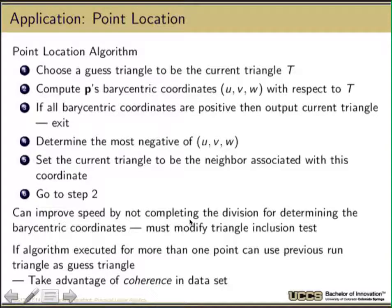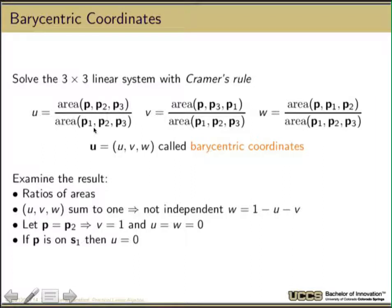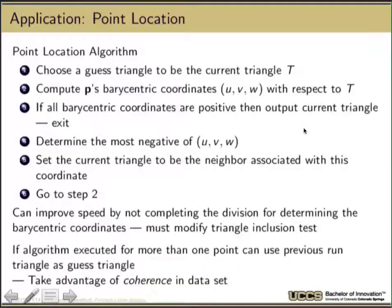It turns out you can also improve this by not completing the division for determining the barycentric coordinates. Remember our barycentric coordinates had this division. You can sort of see that all three of these have the same division. I'm just going to try to figure out which one is the most negative. This won't matter because they'll all be scaled by the same number. I can skip that division step and make it faster. But then I have to be careful as I do that to make sure I don't use it someplace else. If the algorithm is executed for more than one run, you can use the previous triangle as a guess. For example, if I'm clicking around in a structure, I tend to click on one thing and then click on something near it. I don't have to start all over again. Even though the last answer wasn't the right answer for this current object, I can start close to it, which is really just taking advantage of the coherence of the data set and the way people use things.